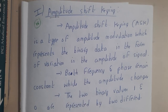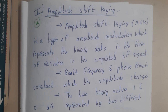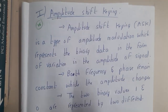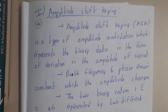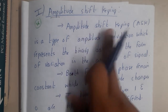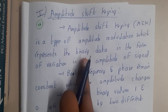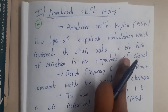Hello guys, we are back with our next lecture. In this lecture, let us go through the concept of Amplitude Shift Keying. This is a modulation method, so if you have not seen the previous lecture about modulation, please check it, because that's the basics. Amplitude Shift Keying, ASK, is a type of amplitude modulation which represents the binary data in the form of variation in the amplitude of the signal.